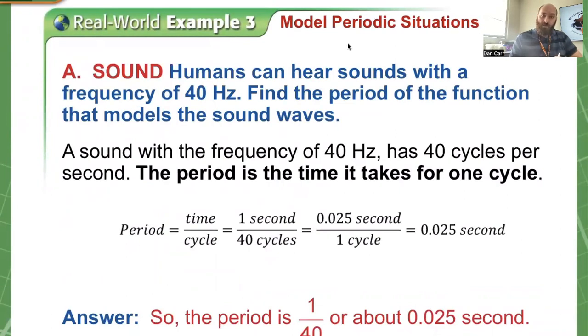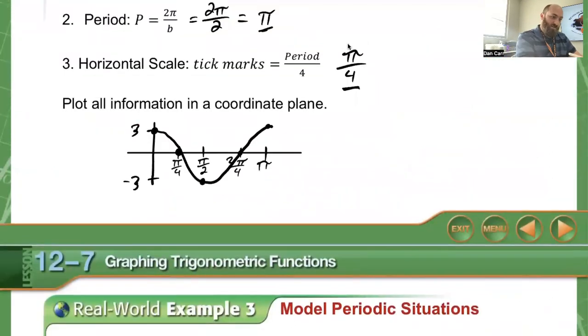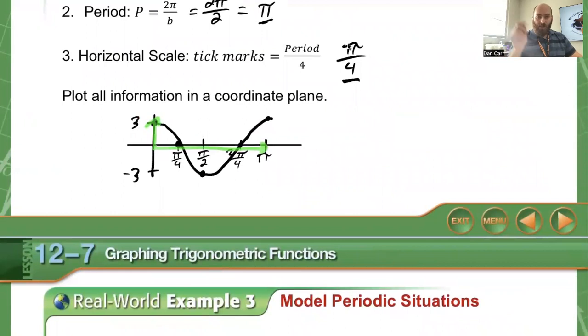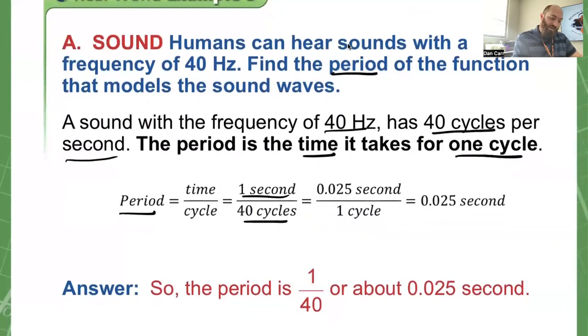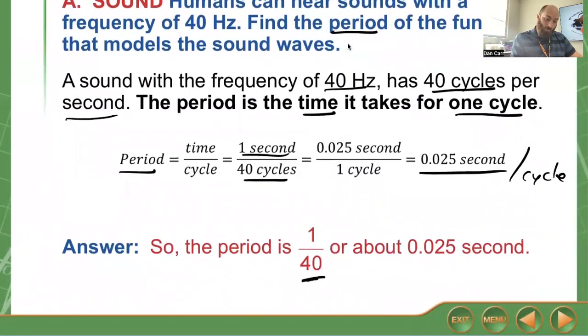Here we've got a word problem. Humans can hear sounds with a frequency of 40 hertz. Find the period of the function that models the sound waves. Since we're talking about frequency, 40 hertz means 40 cycles per second. The period is time over cycle, the time it takes for one cycle to complete. We can say one second is 40 cycles. If I divide both by 40, it's the same as 0.025 seconds per cycle. A full cycle completes in 0.025 seconds. That means our period is 1 over 40 or 0.025.